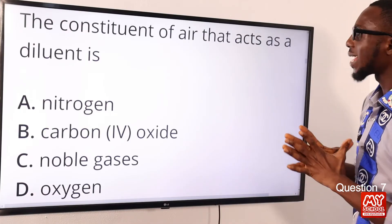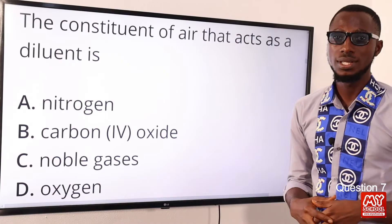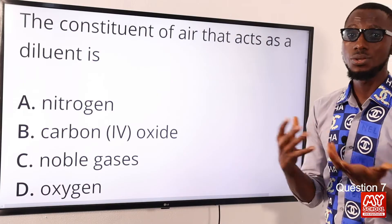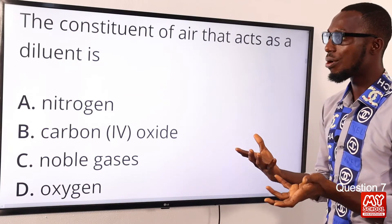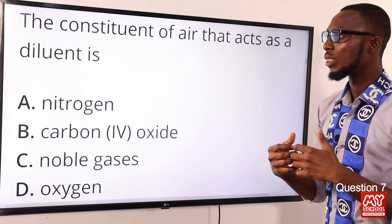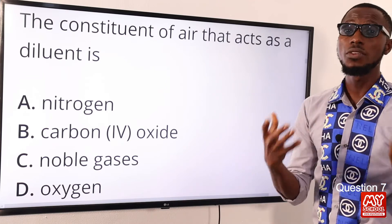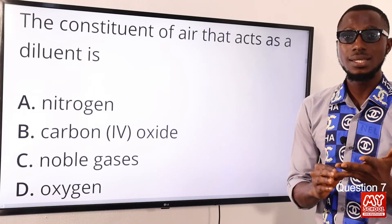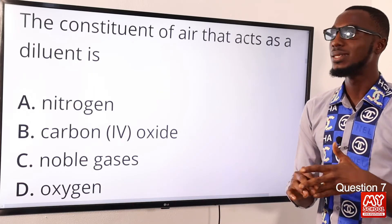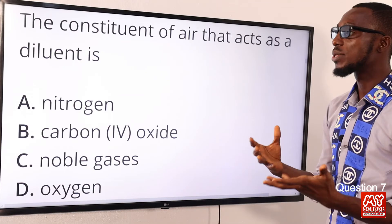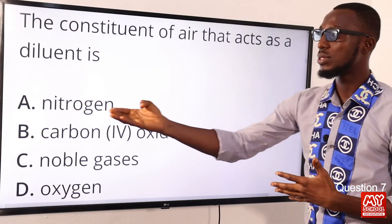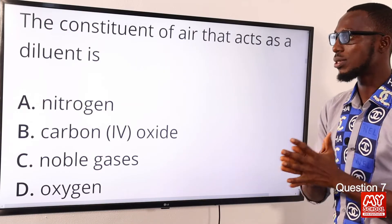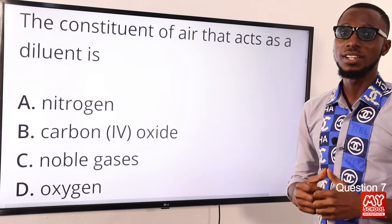Question seven: the constituent of air that acts as a diluent is what? Looking at the properties of a diluent — it must be inert, non-toxic, and stable. We are talking about nitrogen, which carries these properties, as it is non-toxic. So option A is the correct option.